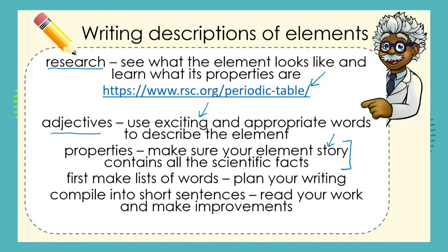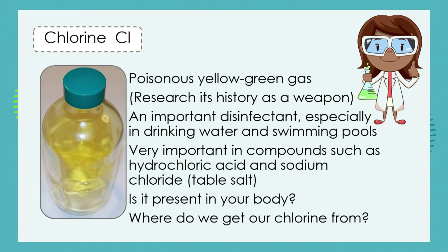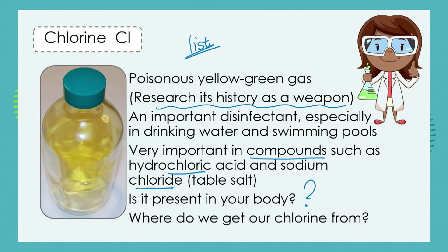First, make a list of words — that's the plan. Then compile short sentences and read your work to make improvements. For example, here is a simple list of chlorine's properties: it's a poisonous yellow-green gas. You could research its history as a weapon. It's an important disinfectant in drinking water and swimming pools. It's a key element in compounds such as hydrochloric acid and sodium chloride, which is table salt.